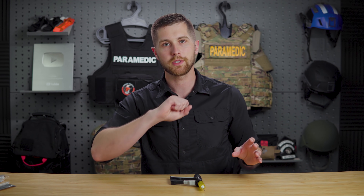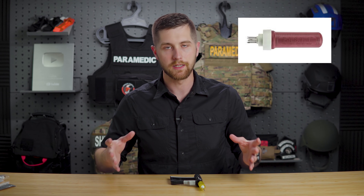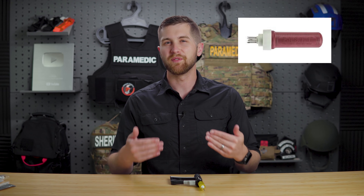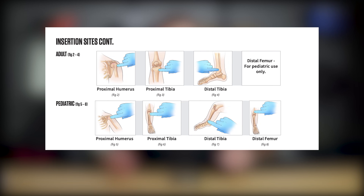There are a number of different sites we can use for IO insertion. The two primary ones we're talking about today are the proximal humerus and the proximal tibia — those are traditional in EMS. Some older military personnel may have seen sternal IOs, used because someone might be missing limbs from an IED blast. That has been phased out due to complications. You may also see distal femur and distal tibia, though those are less common.